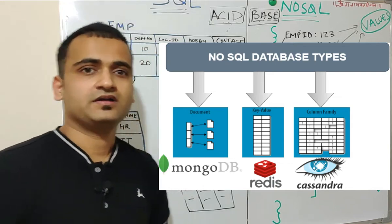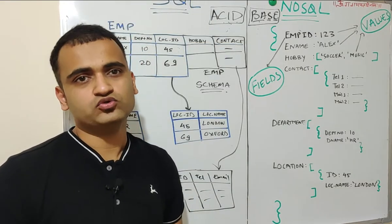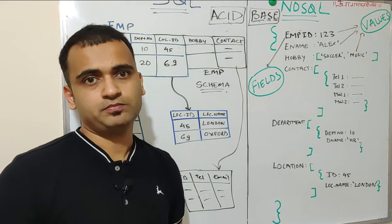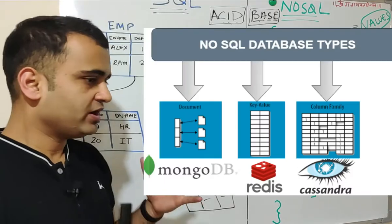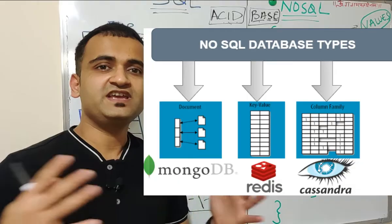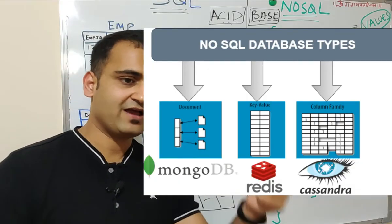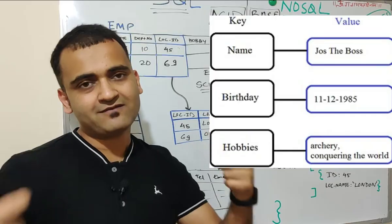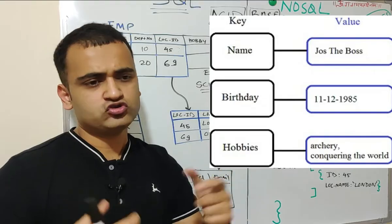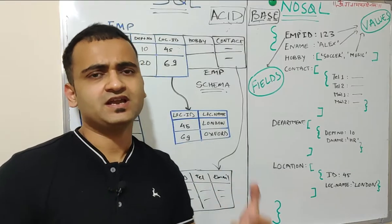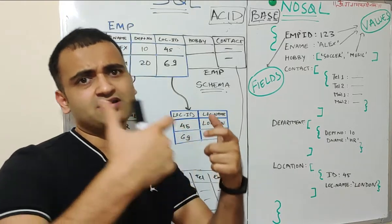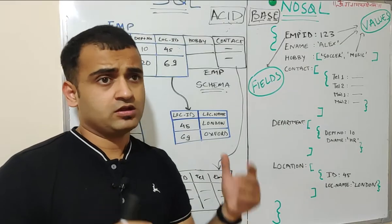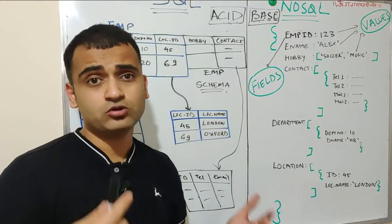MongoDB is a famous document database and this is currently used in companies like Uber. Second type of database is a key value pair database. What is a key value pair database? So it works in the form of key and values. You will have a hash key and in correspondence to that hash key, you will have a value associated with that. So you can take an example of a dictionary. In a dictionary, you search for a word and then you get the meaning of that word when you search through that particular word in the dictionary. The famous company using key value is Twitter and Pinterest.